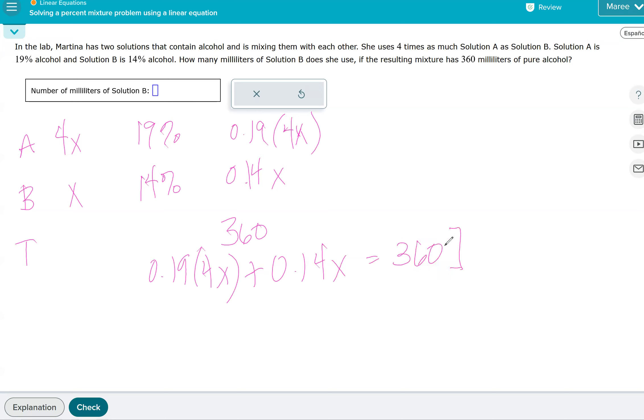So we have 0.19 times 4X plus 14 hundredths X has to equal 360. Now, if we multiply the whole equation by 100, we get 19 times 4X plus 14X equals, now we're multiplying 360 by 100, so we get 36,000.